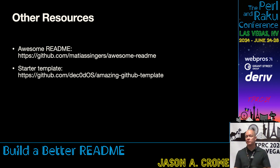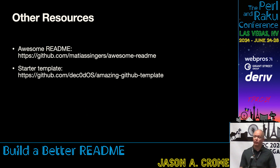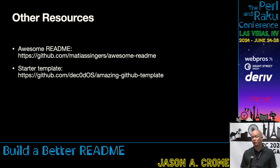Some other resources: I highly recommend the Awesome Readme project on GitHub. It's got a lot of examples of good readmes, a curated list, but it's also got some helpful articles on how to write a good readme and some tools for helping you construct a better readme. And there's a starter template that you can find on GitHub as well.